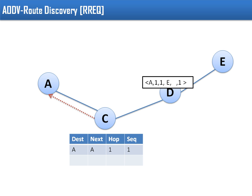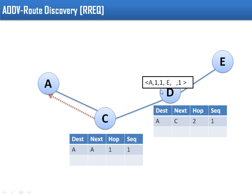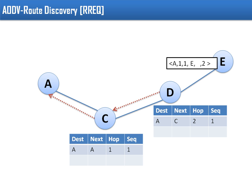D checks the packet and sees the destination is E, so D also re-broadcasts the packet. Before doing so, D creates a routing table entry: since this packet is coming from the direction of C, D records that to reach destination A, it must go to C, with hop count information from the packet. D then sends this packet to E.